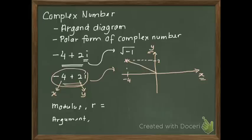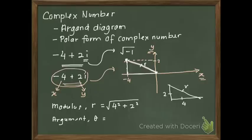Or we call it theta. What is modulus and argument? Modulus is the distance from the origin to the coordinate that we plotted. This is actually a triangle, and this is the R that you are looking for. This one is the 4, and here is 2. How do you find the R? You use the Pythagorean theorem: 4 squared plus 2 squared, square root. What you will get here is 4.472.